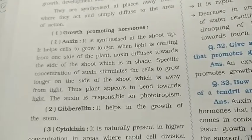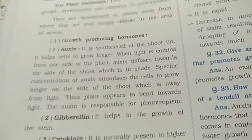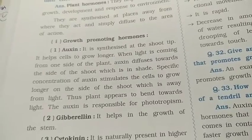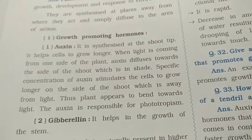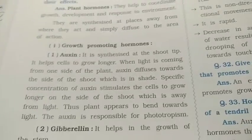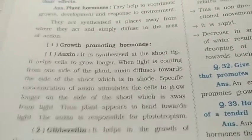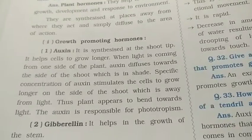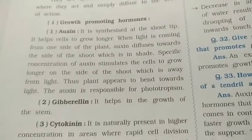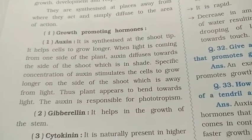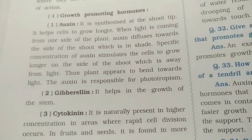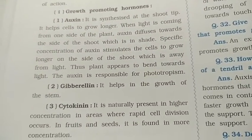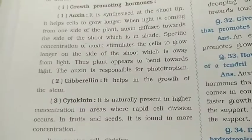When light hits one side, the other side has more auxin. Thus the plant appears to bend toward the light — the plant is phototropic. Auxin is responsible for phototropism. For phototropism, the hormone responsible is auxin. It also helps in the growth of the stem.